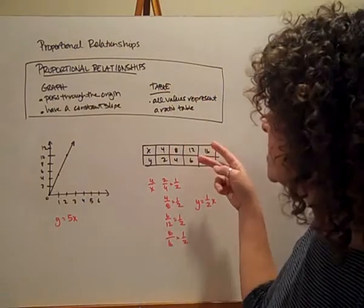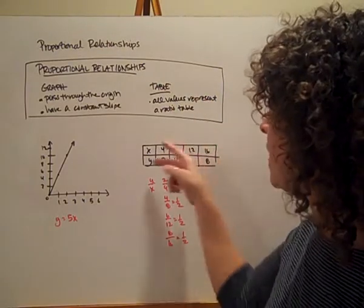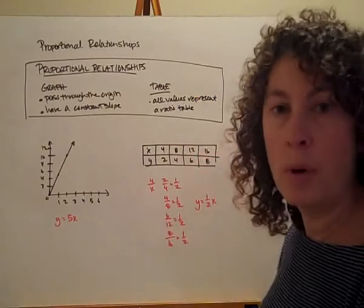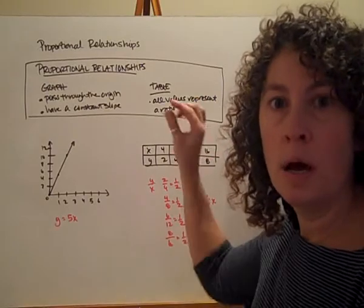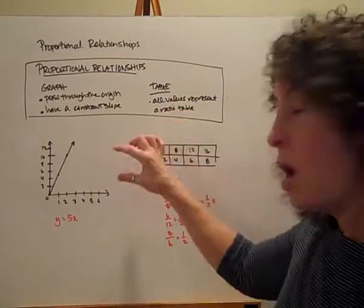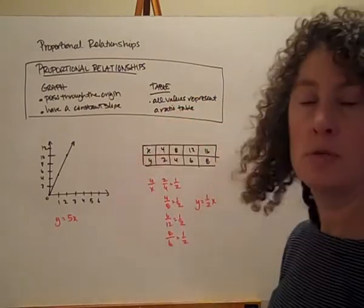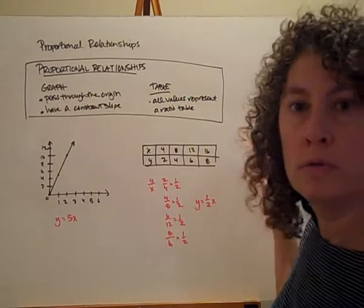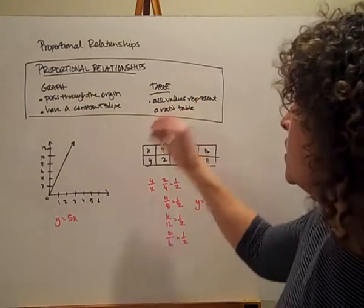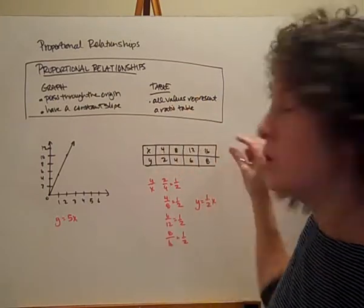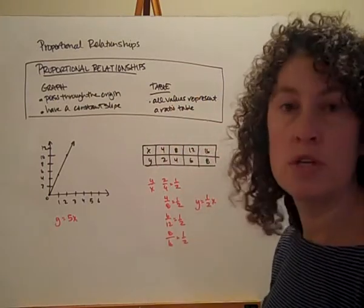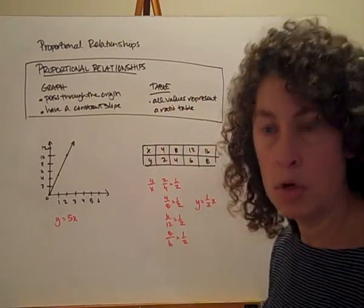On a table, I'm going to see that those values — my x and my y — represent a proportion. All of the values, as I look at them, represent equivalent ratios. I could think about this as a ratio table where all of these relationships are proportional.